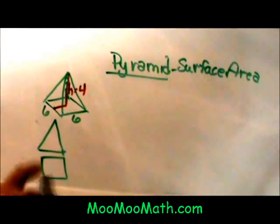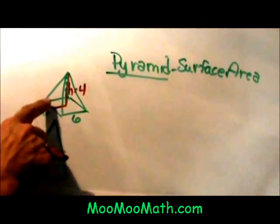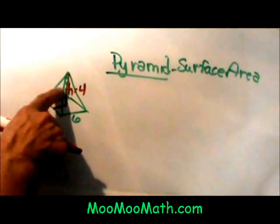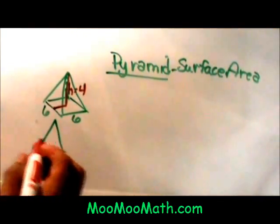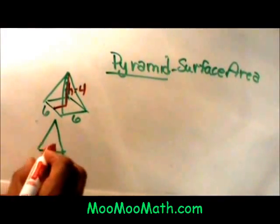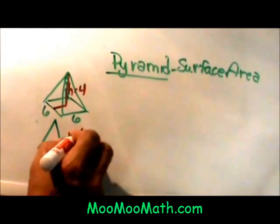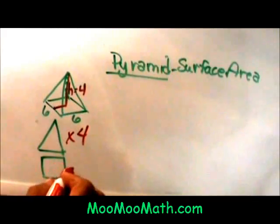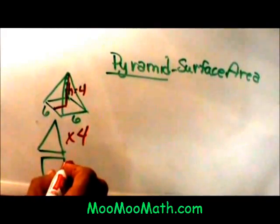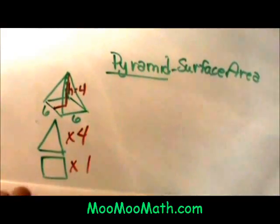To find the surface area I have to look at this figure and think, well I have four sides so I have four triangles. If I can find the area of the triangle I can multiply it by four and then I am going to add just one base to it. I only have one base to add to it.